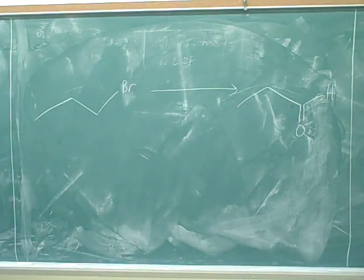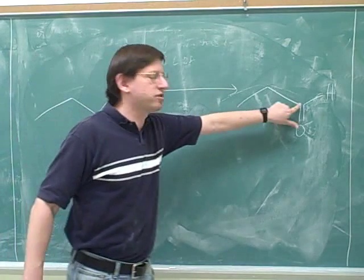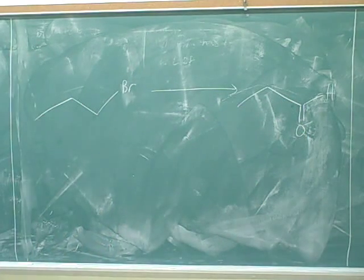Or in general, oxidation, the more general definition of oxidation is forming more bonds to electronegative atoms. Well, here we started with one bond to an electronegative atom, and then we ended up with two bonds to electronegative atoms. So that's good. We'll need an oxidation eventually.